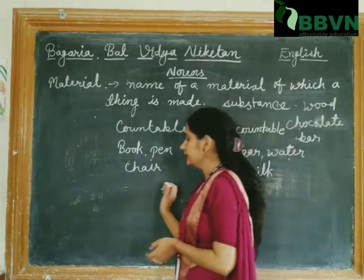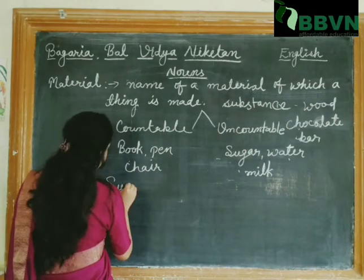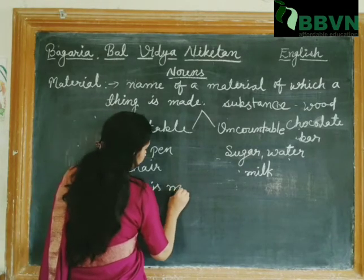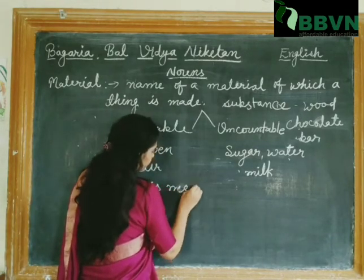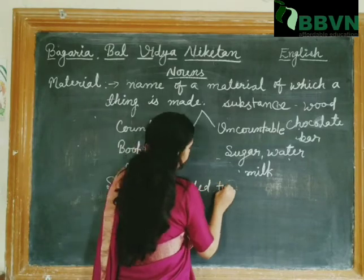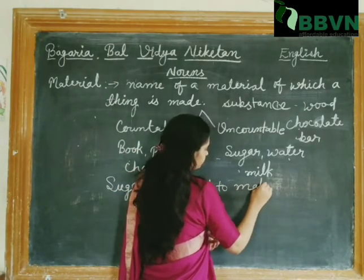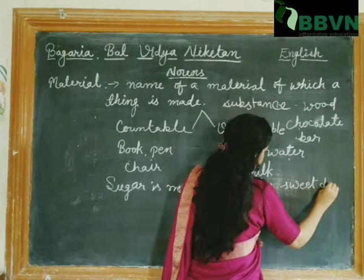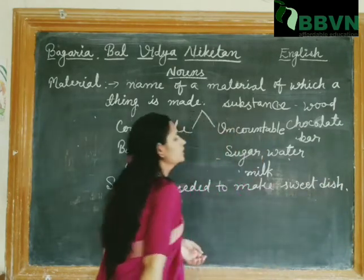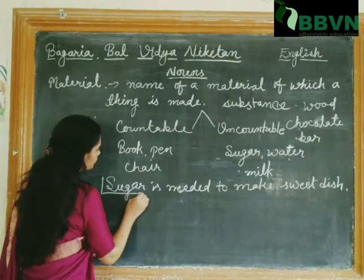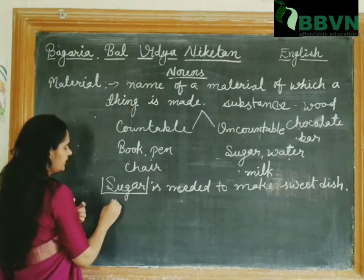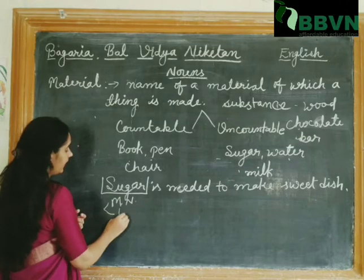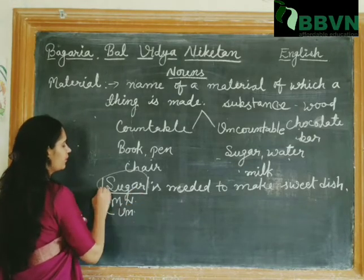For example, we can write: 'Sugar is needed to make sweet dish.' Here, sugar is a material noun. And which type in the material noun? It is uncountable.